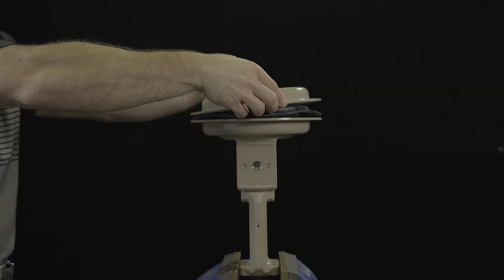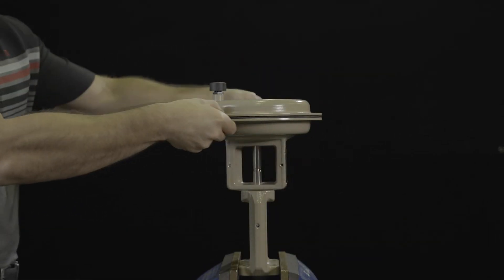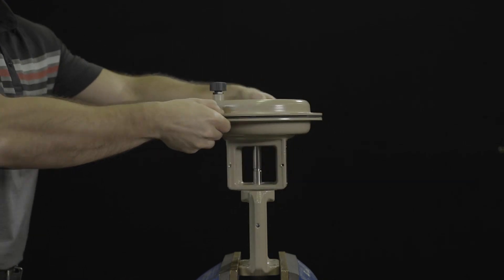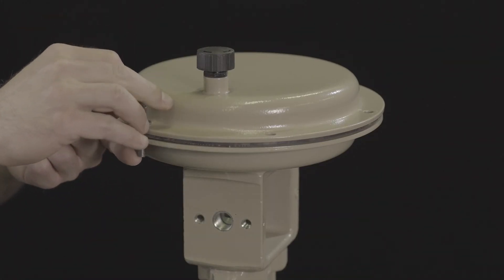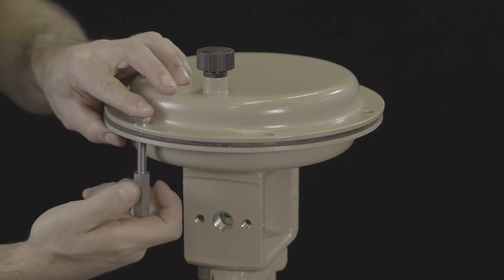Place the top of the actuator case onto the assembly. Ensure that the air connections on the cases are correctly aligned with each other. Fasten the top and bottom diaphragm cases together using the nuts and bolts. Observe tightening torques.